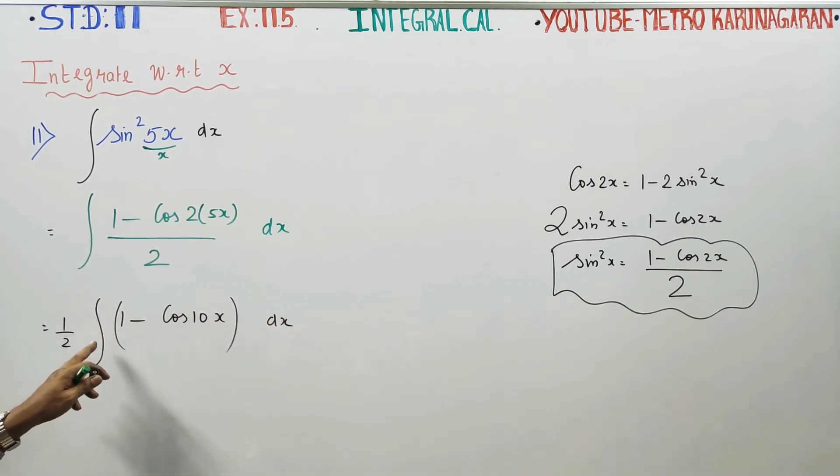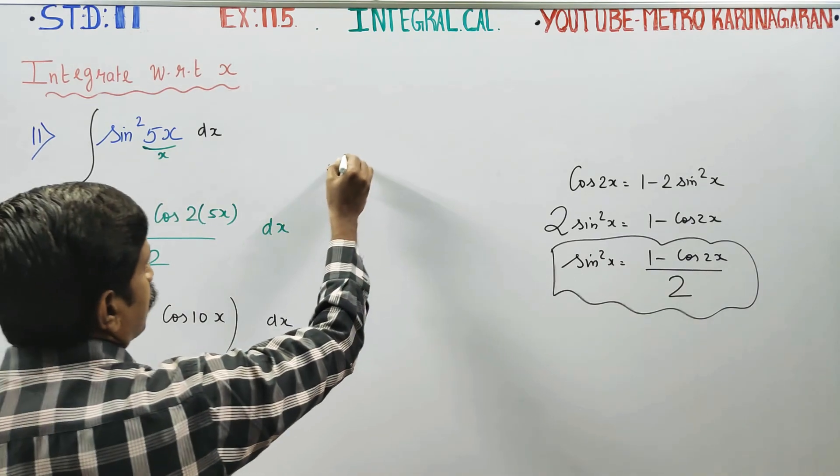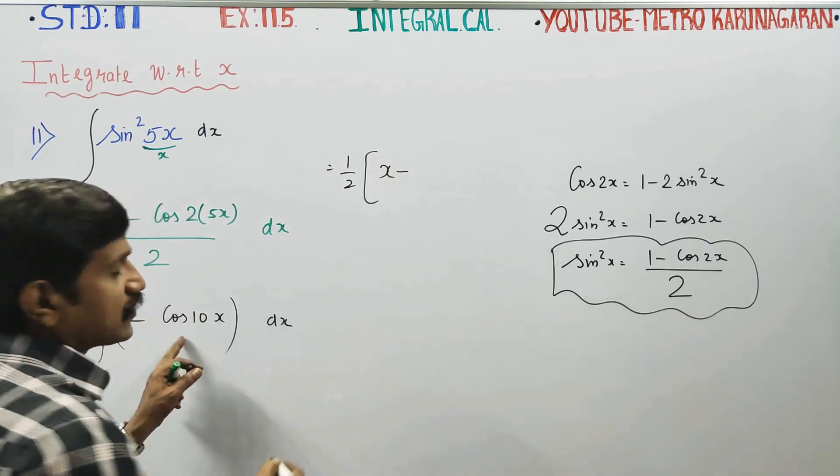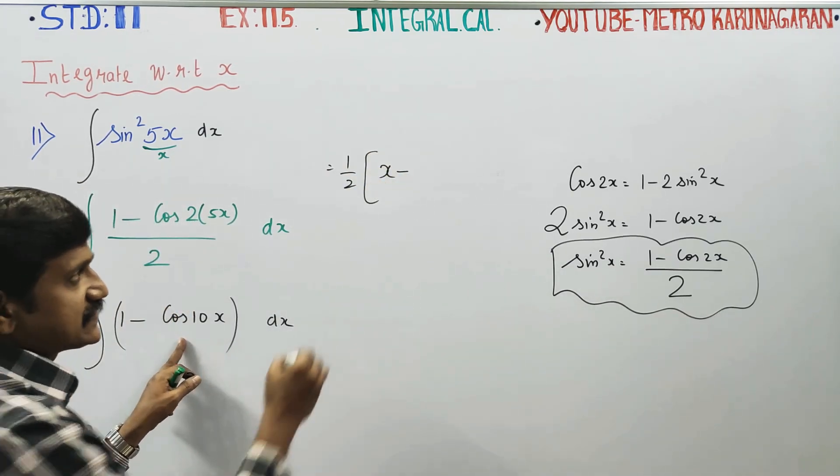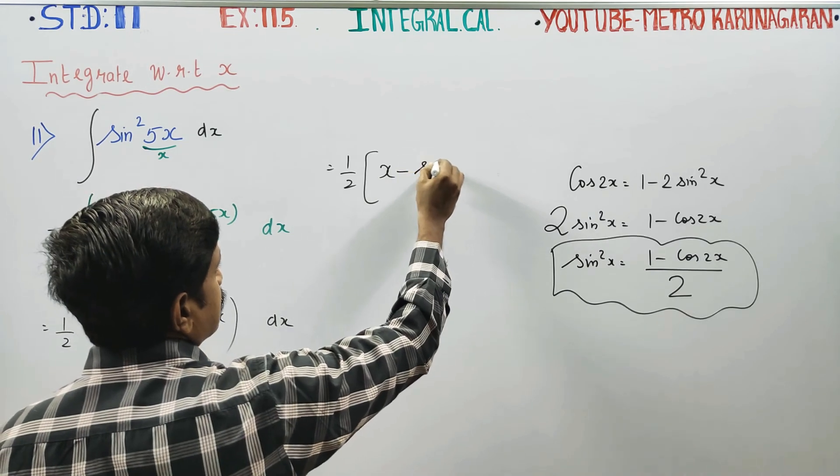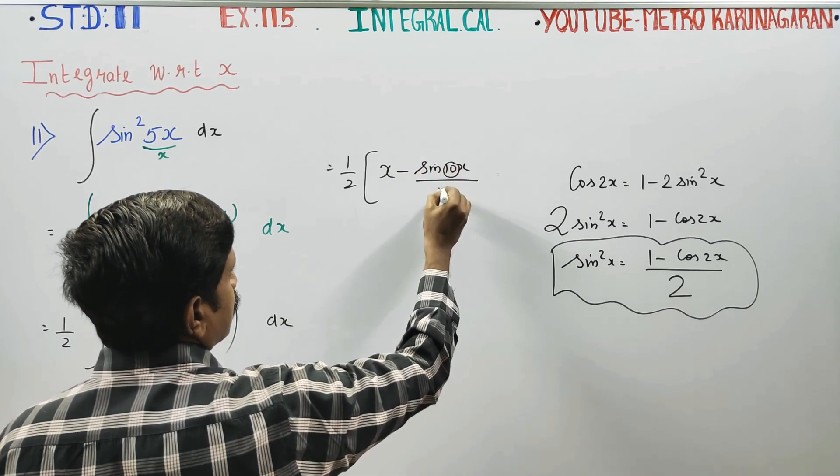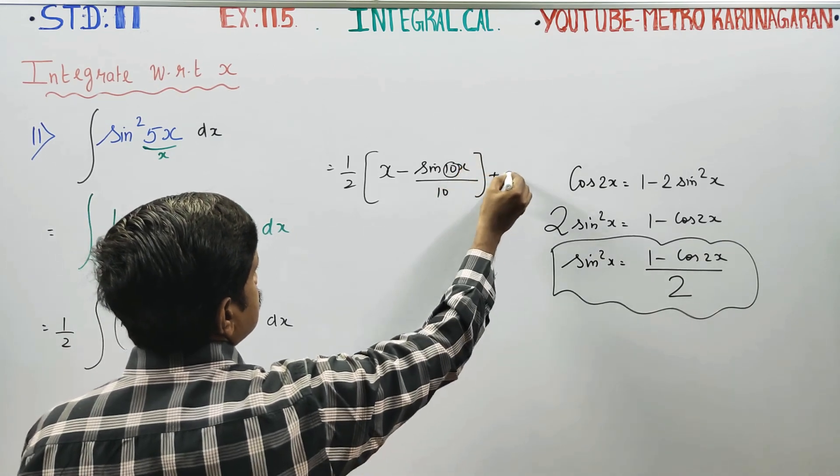1 is a constant. That is k. kv integrate panna kx. 1 integrate panna 1x. Apo 1 by 2, 1 integrate panna x. Cos integrate panna sin. x kudadh x kudadh 10 irukkudadh. Divide by 10 pottukun. Plus c.